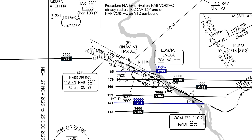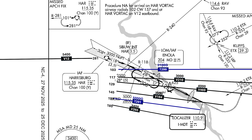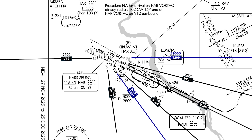Almost all the airways require a turn of more than 120 degrees — some require a turn of almost 180 degrees all the way around. The exception is Victor 265 at the bottom, which only requires a course change of 113 degrees. This is less than the 120-degree maximum allowed by the procedure designers, so the procedure is allowed for arrivals on Victor 265. We can tell that from the note: the disallowed airways are from 102 clockwise to 157, and Victor 265 on the 185 radial is fine.